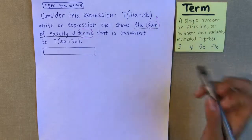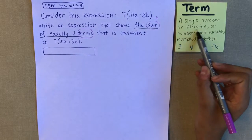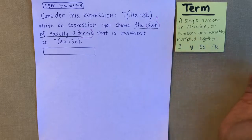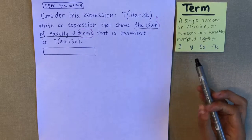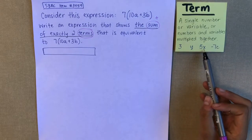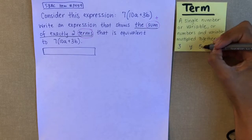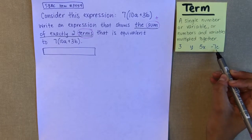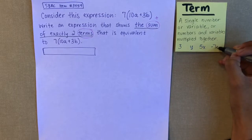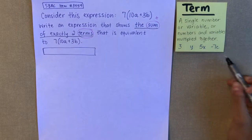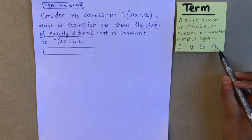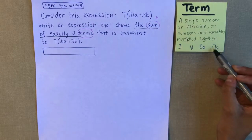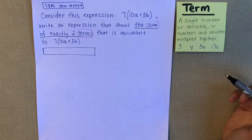We also need to know what a term is. A term can either be a single number like 3, a variable like y, or numbers and variables that are multiplied together. For example, 5x is really 5 times x — that's a term. Negative 7c is really negative 7 times c — a number and a variable multiplied together — so that's also a term.